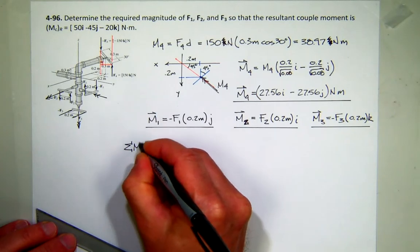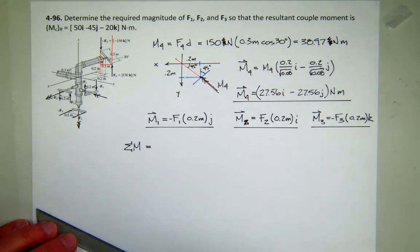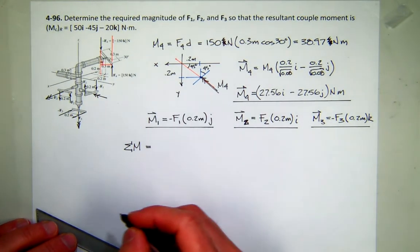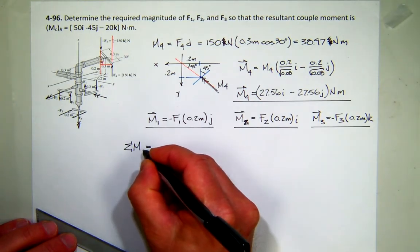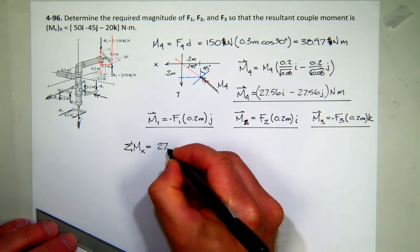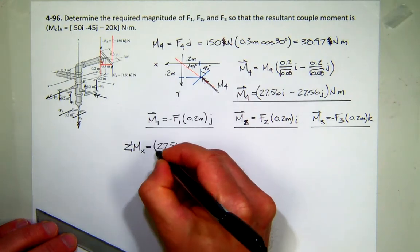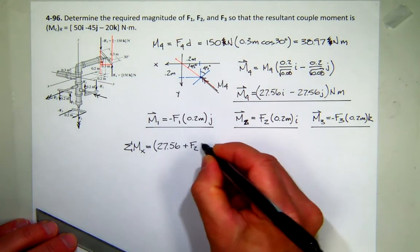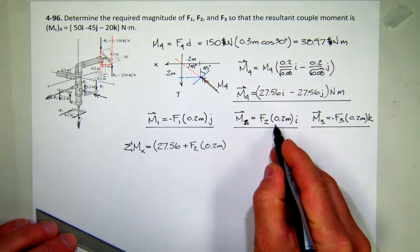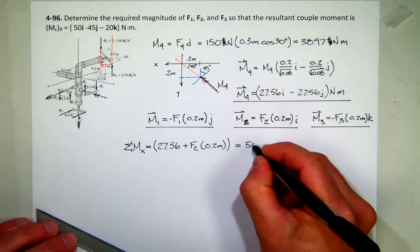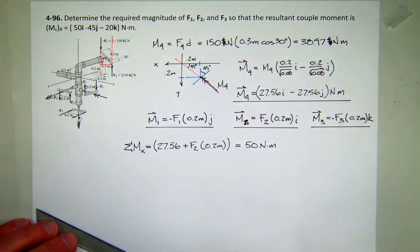So all we have to do now is just sum all the moments. And the sum of the moments should be equal to this. So we'll do it component-wise. So if I sum all my moments in just, say, the X direction, what do I get? Well, from four, I get 27.56. One contributes nothing in the X direction. Plus F2 times 0.2 meters. And nothing from here. So that should be equal to the X component here, which is 50. So I should be able to solve for F2.